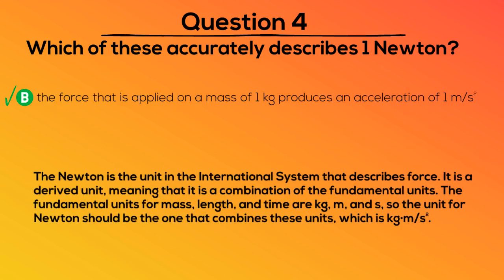The correct answer is B. The newton is the unit in the international system that describes force. It is a derived unit, meaning that it is a combination of the fundamental units. The fundamental units for mass, length, and time are kilogram, meter, and second, so the unit for newton should be one that combines these units, which is kilograms times meters per second squared.